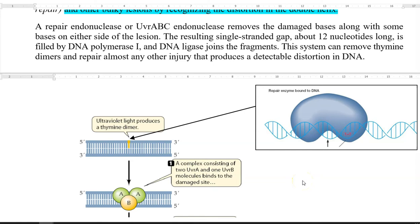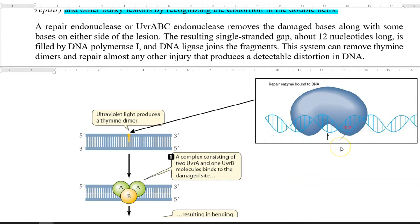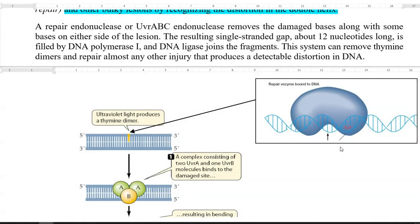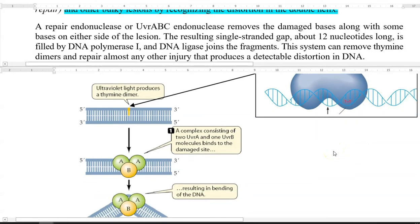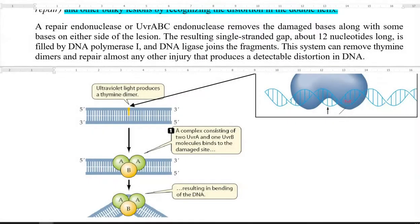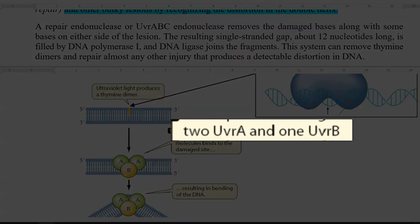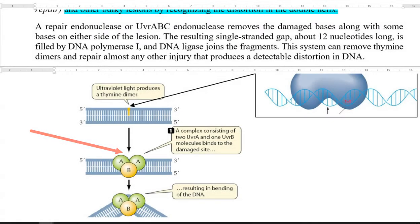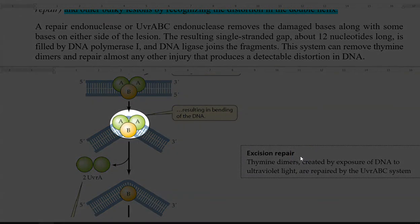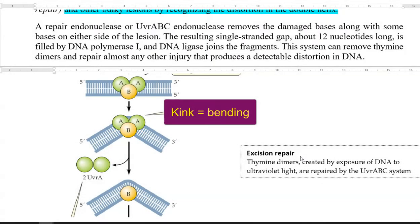This diagram explains how this mechanism operates in the cell. In the first step, ultraviolet light produces a thymine dimer — a form of damage in the nucleotides. This damage needs to be repaired by the nucleotide repair mechanism. Endonucleases referred to as UVR-A, UVR-B, and UVR-C are involved. First, two UVR-A molecules and one molecule of UVR-B bind to the damaged site — that is, to the thymine dimer site — causing a kink or bending in the backbone of the DNA.